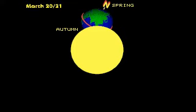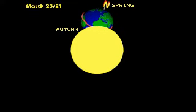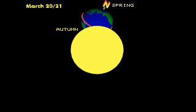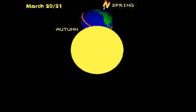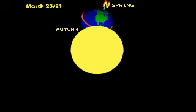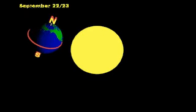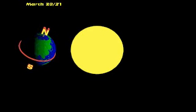At the beginning of spring in the Northern Hemisphere and fall in the Southern Hemisphere, the Earth's axis is positioned so that both hemispheres receive equal amounts of light. During spring, temperatures generally become warmer in the North and cooler in the Southern Hemisphere.